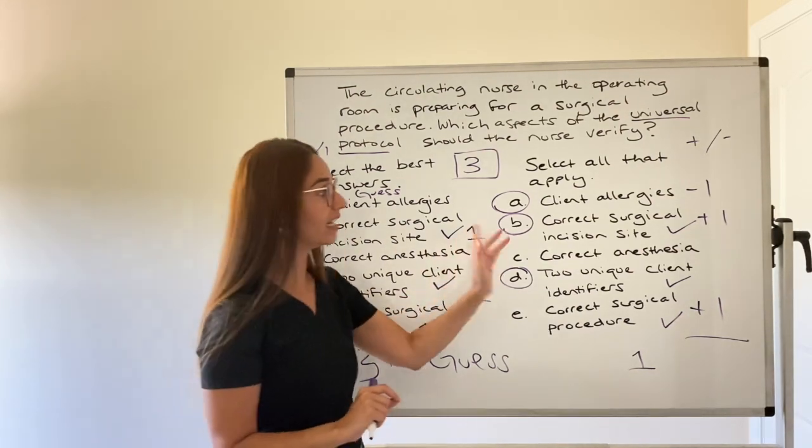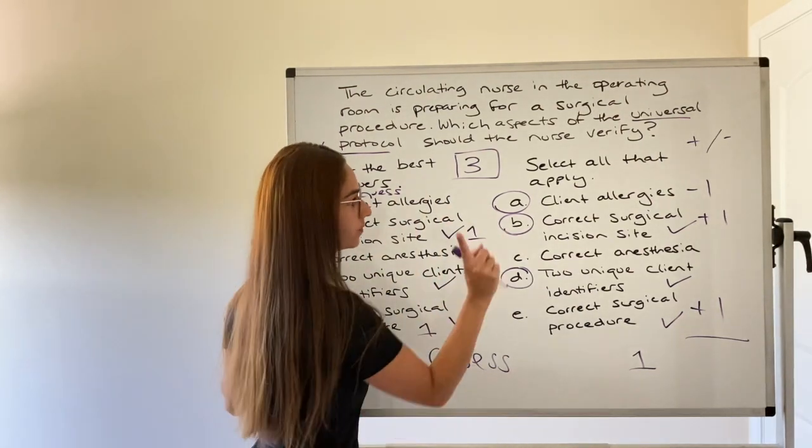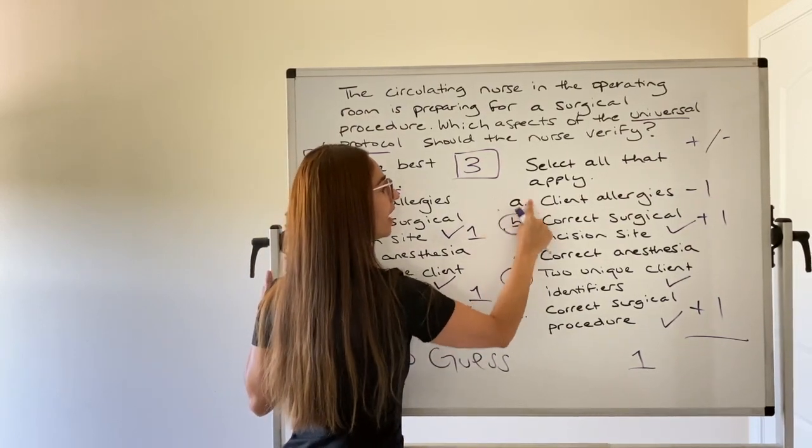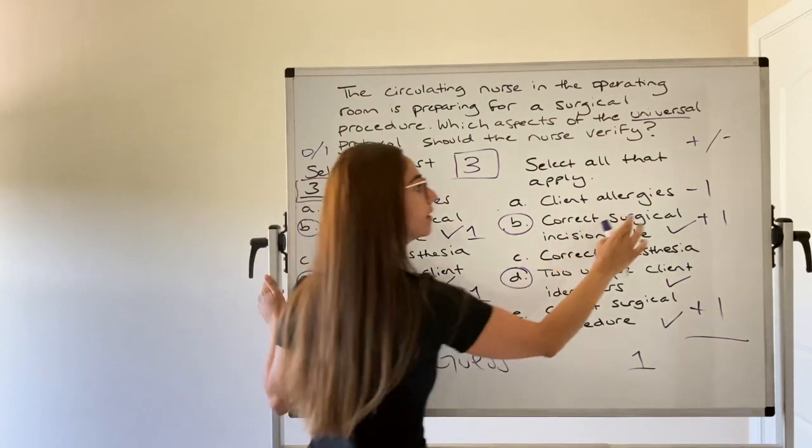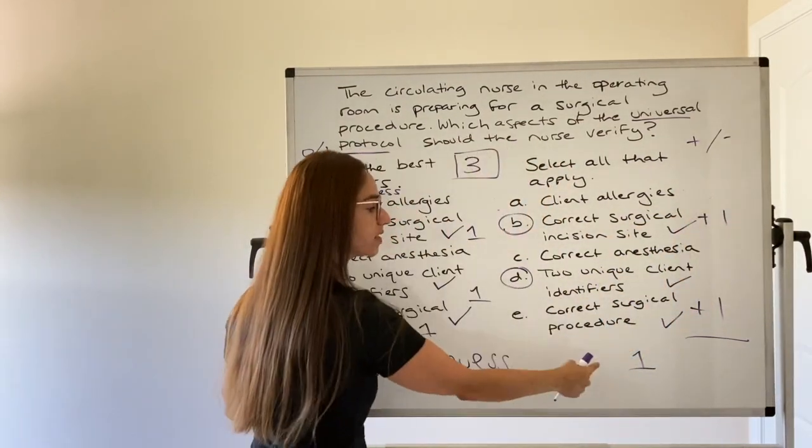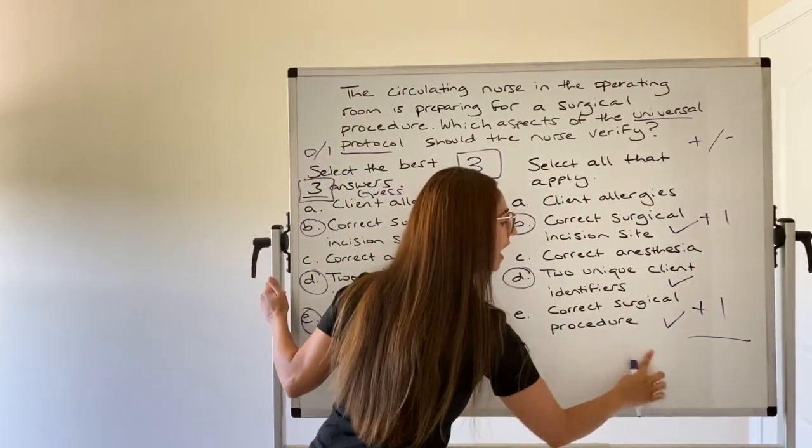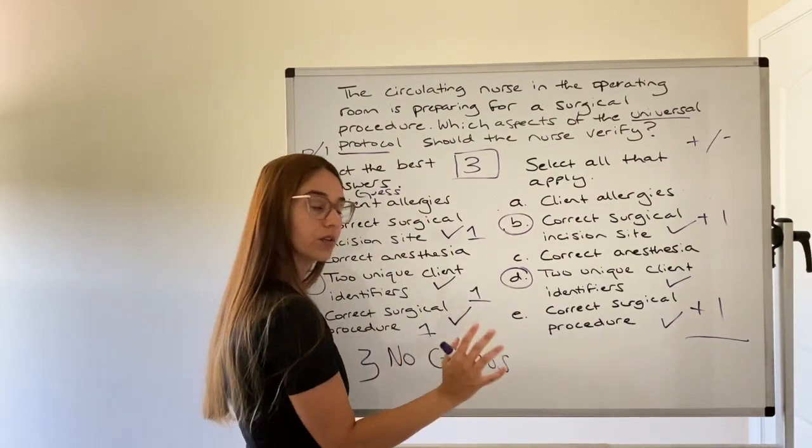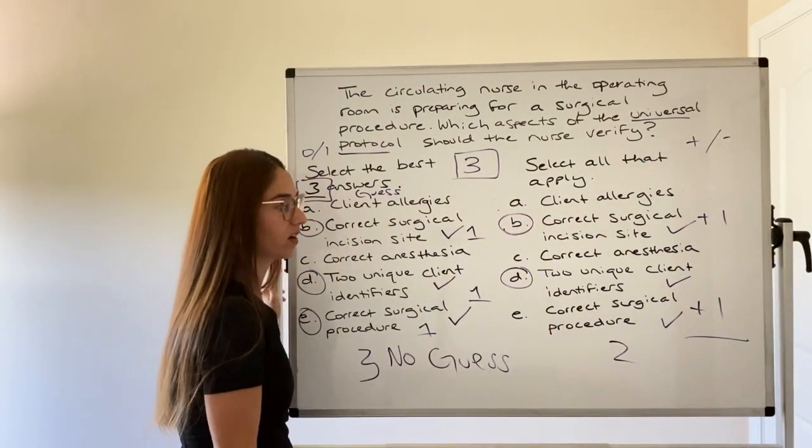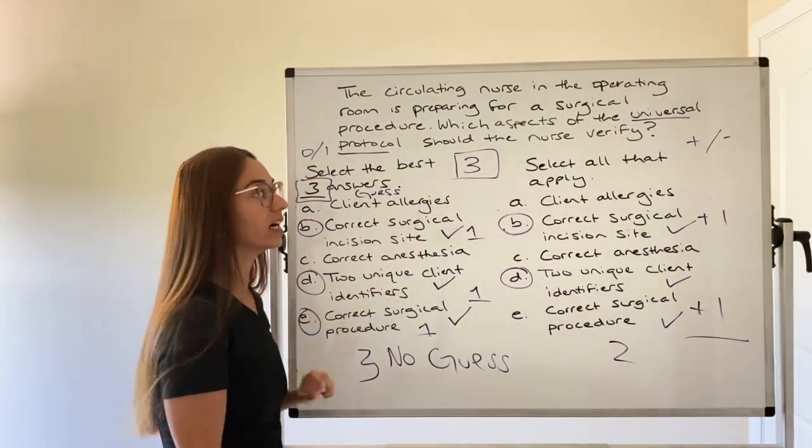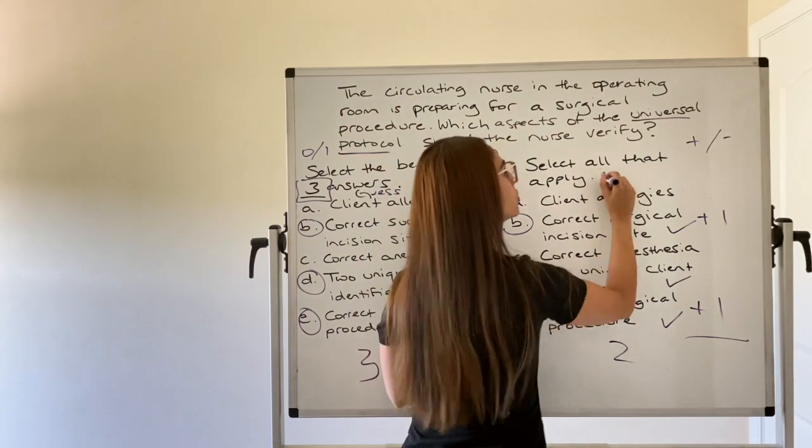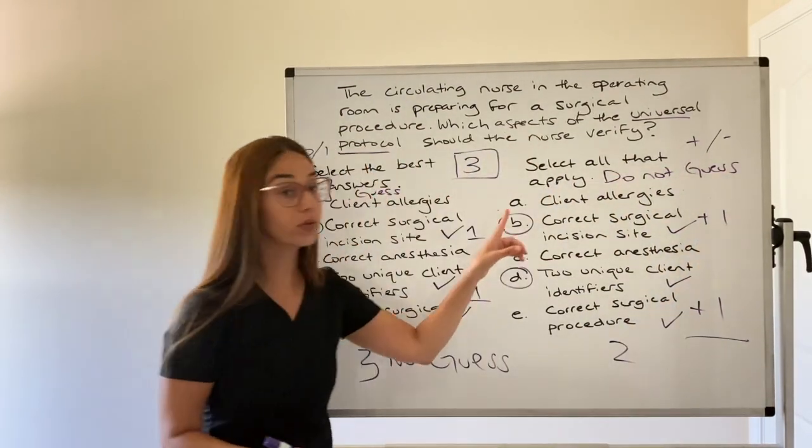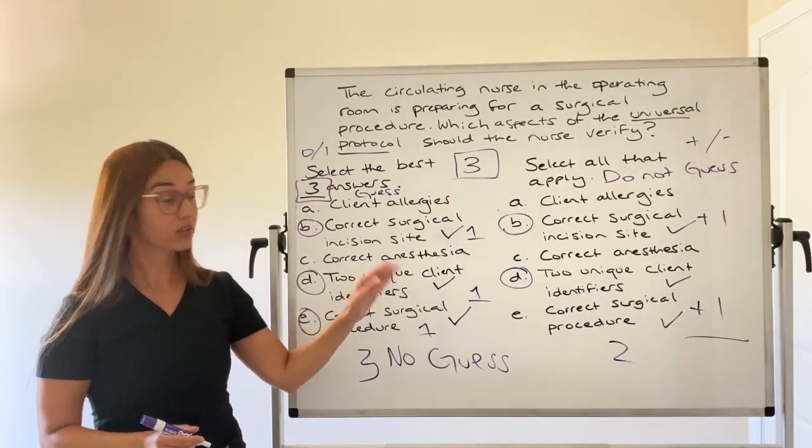Over here again, if I had not have guessed, so let's take away my guess over here. If I had not have guessed with select all that apply, I wouldn't have lost a point. So instead of one point, I would have gotten a point for every answer I absolutely knew. So I would have gotten two points for my select all that apply. So again, your strategy for select all that apply, do not guess.